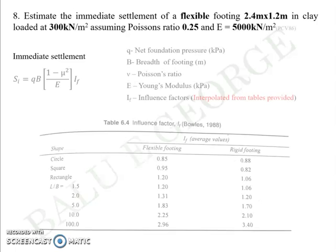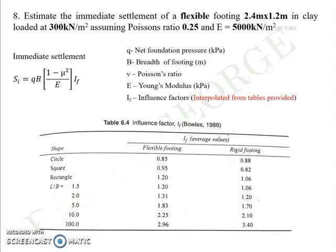Again, you use the same equation. In this particular question, the influence factor is of a flexible footing, because it is already given in the question that the footing is flexible, and with 2.4 by 1.2. So based on that, L by B of 2 - 2.4 by 1.2 turns out to be 2 - based on which you get a value of influence factor from the flexible footing column in the table. Every other term is given: you are given Q, you are given mu, you are given E, and you are given B breadth. All you have to do is use the table, interpolate the value of influence factor based on the flexible or rigid nature that you expect.